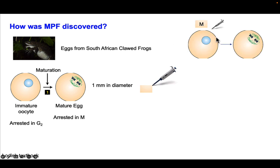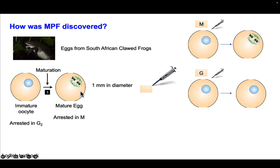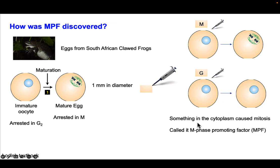Here's a cartoon of what those experiments showed. If cytoplasm was collected from a mature egg arrested in mitosis and injected into an immature oocyte, that immature oocyte then underwent mitosis — the nucleus broke down, chromatin condensed, and chromosomes began to separate. If they instead took cytoplasm from cells arrested in G2 and injected it into immature oocytes, nothing happened. This told scientists that something in the M-phase cytoplasm causes mitosis, and they called it M-phase promoting factor, or MPF.